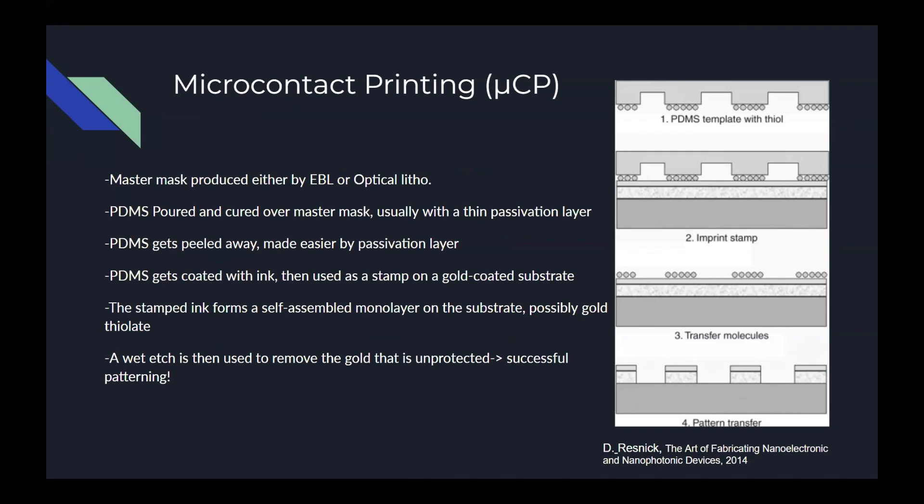The microcontact process begins with a master mask — not shown in this picture. The mask would typically be silicon that was previously patterned and etched, along with a thin passivation layer to help prevent strong adhesion in the following steps. PDMS is then poured over the mask, cured, and peeled away, creating a flexible imprint of the mask.